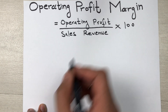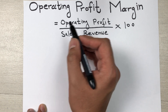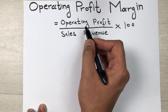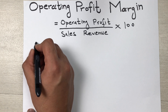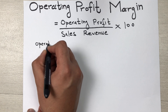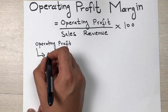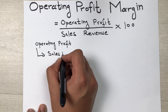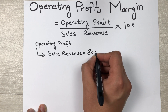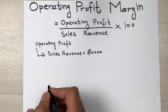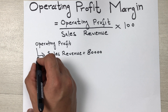multiplied by 100. First I will tell you how to find out the operating profit. Operating profit consists of different factors — it consists of sales revenue. Let's say our sales revenue was 80,000. It also consists of cost of sales.